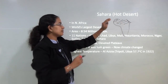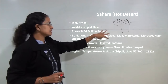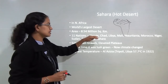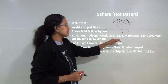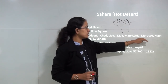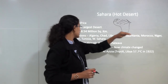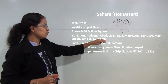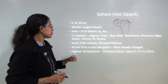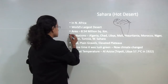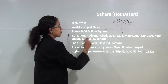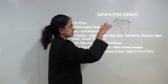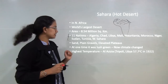There are 11 countries affected by the Sahara desert: Algeria, Chad, Libya, Mali, Mauritania, Morocco, Niger, Sudan, Tunisia and Western Sahara. These are the 11 nations that fall within the area of the Sahara desert.